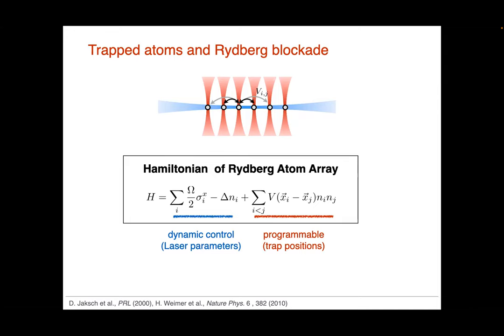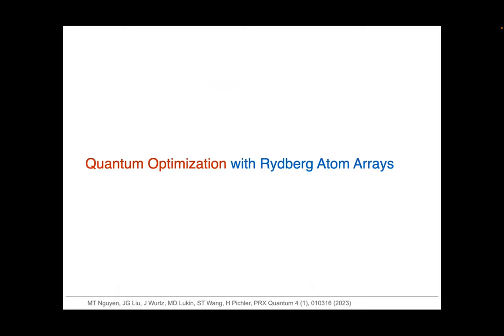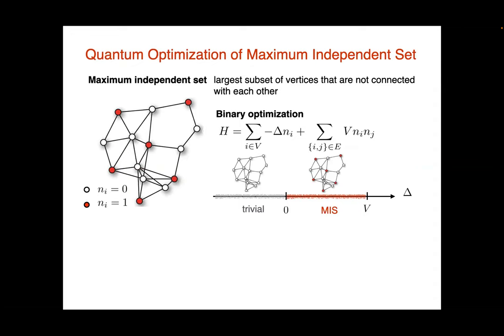In the first part of my talk, I will explain how one can do quantum optimization with these capabilities. When talking about quantum optimization with Rydberg arrays, it's very useful to start with the maximum independent set problem, which was already introduced by Nisha and also in a QuEra talk by Tommaso. The idea is you're given a graph and you're trying to find the largest independent set — a subset of vertices that are not connected on this graph. I color this largest independent set in red, and I formulate this optimization problem as a binary optimization problem.